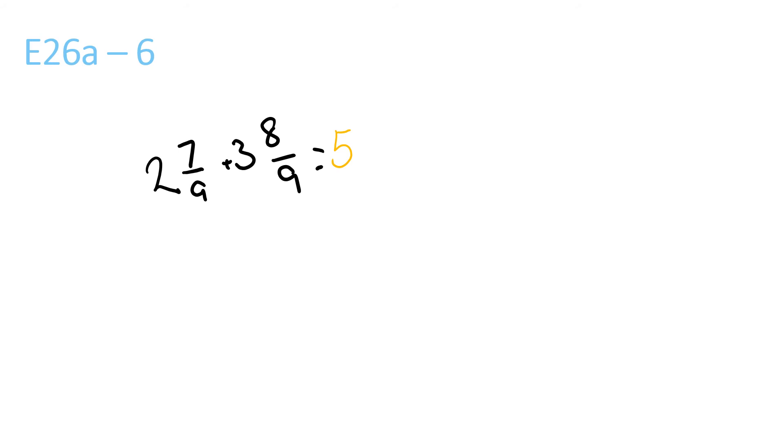2 plus 3 is 5. 7 plus 8 is 15 over 9. 9 goes into 15 once with a remainder of 6 over 9. You have 1 and 6 over 9 plus 5, which equals 6 and 6 over 9.